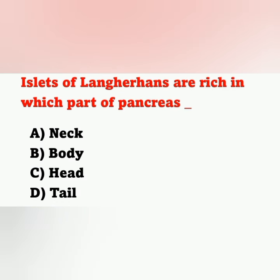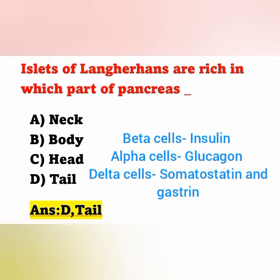Next question: the Islets of Langerhans are rich in which part of the pancreas? Options: A: neck, B: body, C: head, D: tail. The Islets of Langerhans are clusters of hormone-producing endocrine cells present at the tail of the pancreas — option D is correct. They consist of three main cell types: beta cells secreting insulin, alpha cells secreting glucagon, and delta cells secreting somatostatin and gastrin.